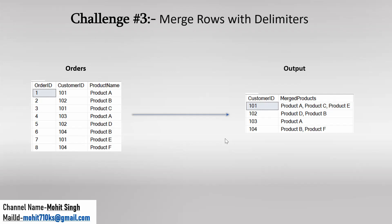Let us first try to understand the output. In the output table, if you observe the first row for customer ID 101, we have product A, product C, and product A. And the same thing if you observe in our orders table — for customer ID 101, the product name is product A, then product C at row three, and product A again at row seven. So if you merge these three products using a delimiter — in this case, a comma — then you will get this as an output.